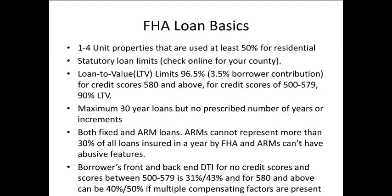The borrower's front-end and back-end DTI for no credit score or a low credit score between 500 and 579 is 31% front-end and 43% back-end. For a higher credit score of 580 and above, it can be 40% front-end and 50% back-end, but there must be multiple compensating factors present as described in the handbook. A borrower can have a 3.5% down payment with either no traditional credit or a very low credit score — between 500 and 579 is considered quite low.